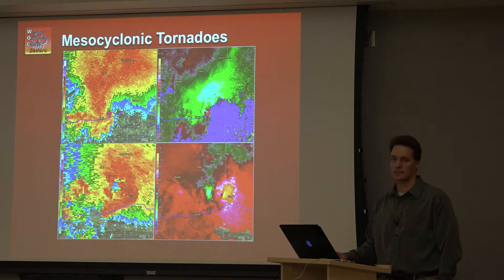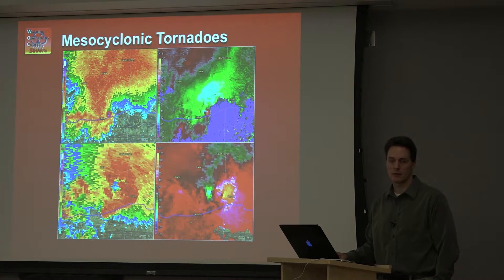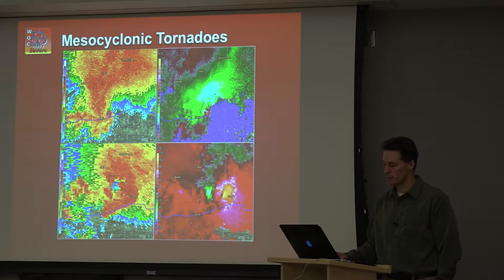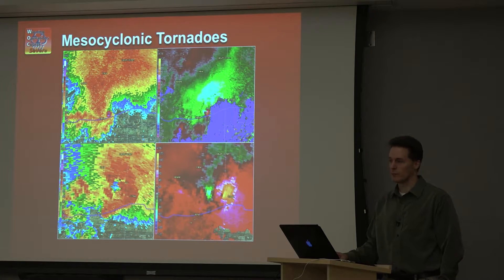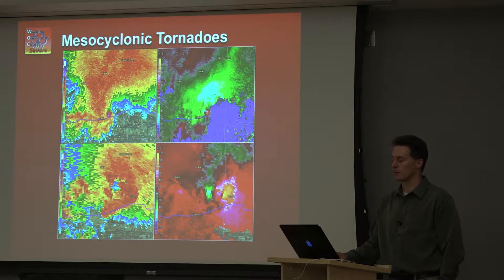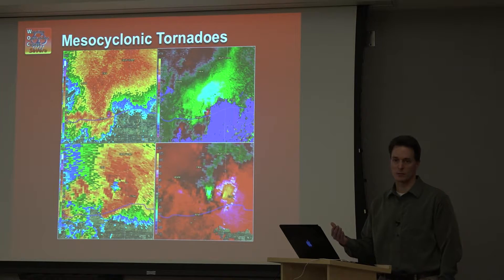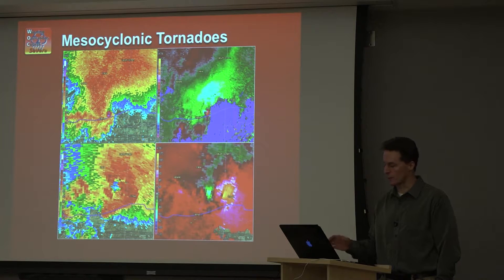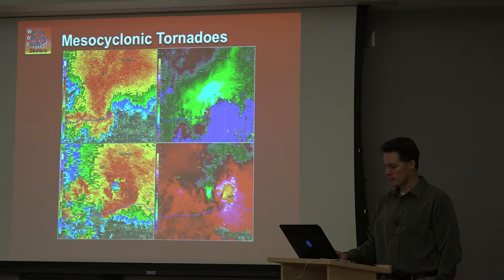Here's a case of a classic supercell tornado — a long-track EF4 from the evening of April 27th, 2014: the Valonia, Arkansas tornado, which was the deadliest tornado in Arkansas history. There weren't very many tornadoes that day, but when you have one 70-mile-track EF4 that hits a town, bad things happen. The point is that you want to be able to identify these storm structures and this sort of potential in the environment in repeatable ways.